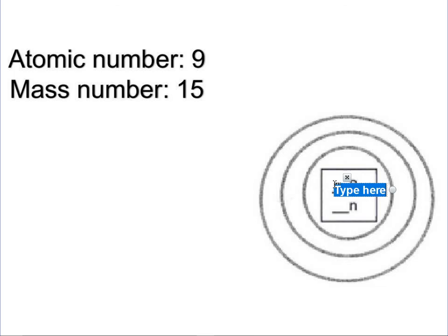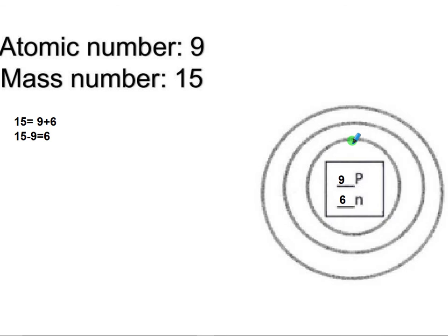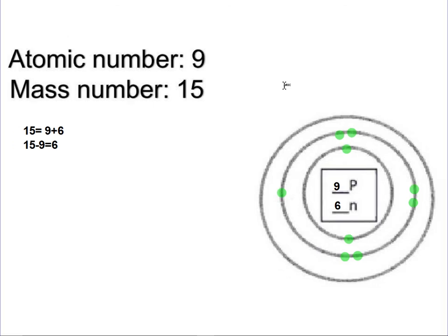The next one has atomic number 9, so you have 9 protons. Figure out your neutrons: 15 equals 9 plus a number, so 15 minus 9 equals 6. Check: 9 plus 6 equals 15 — we have 6 neutrons. Add in your electrons, same number as your atomic number: 2 in the first energy level and then 7 for a total of 9. The atomic number 9 is fluorine, so this is fluorine-15.